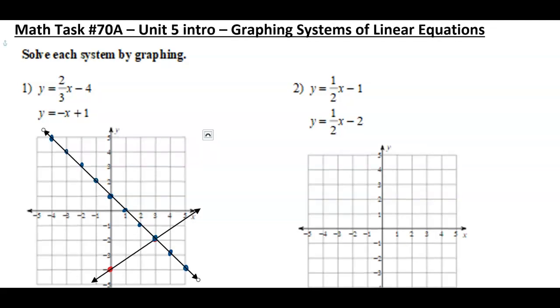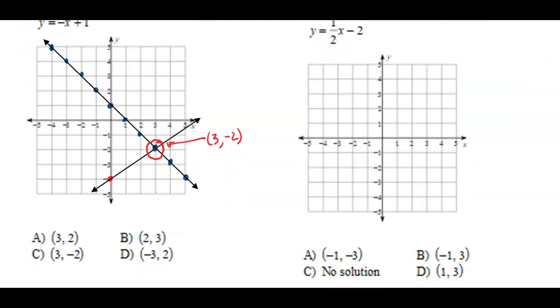So our solution for this system of linear equations lies at the intersection. That coordinate is 3, negative 2. And obviously you have multiple choice here. So C is your answer.